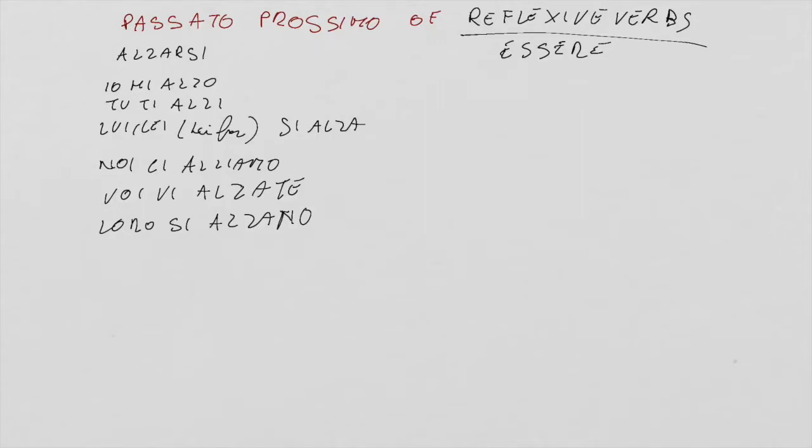Now let's transform these forms into the passato prossimo. The subject and the reflexive pronoun do not change, so keep io mi, tu ti, and so on. What changes is the verb: first you need the present tense of essere, the auxiliary verb, then the past participle of alzare, that is alzato.